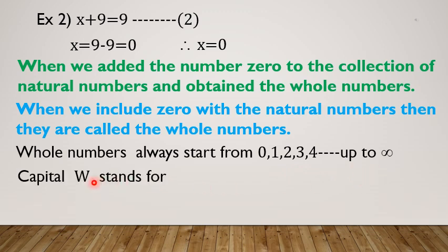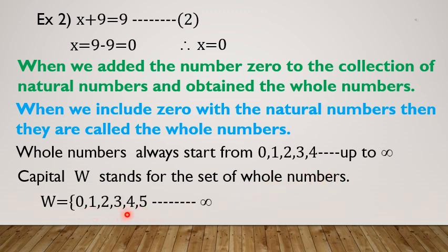Capital W stands for the set of whole numbers. W = {0, 1, 2, 3, 4, 5, ..., ∞}.